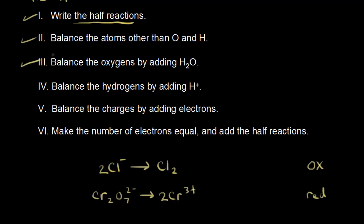Step three: balance the oxygens by adding water. The oxidation half reaction has no oxygens, so nothing to do there. For the reduction half reaction, we have 7 oxygens on the left and none on the right, so we add 7 water molecules to the right side. That gives us 7 oxygens on the right. Step three is done.